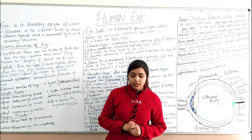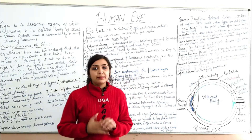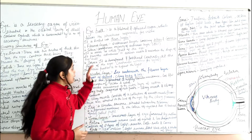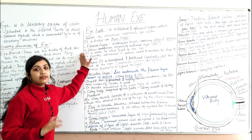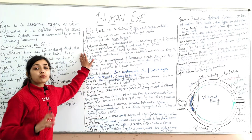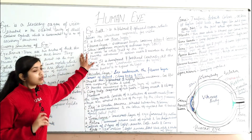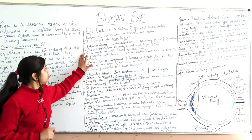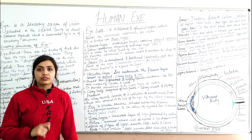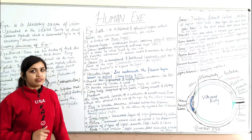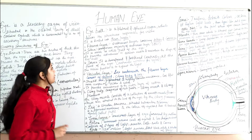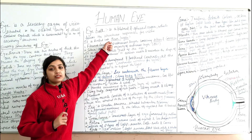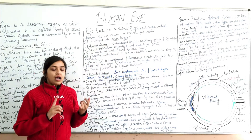Now moving to the eyeball structure. The eyeball is a spherical organ comprising structures responsible for vision. It is divided into three layers: outer, middle, and inner.